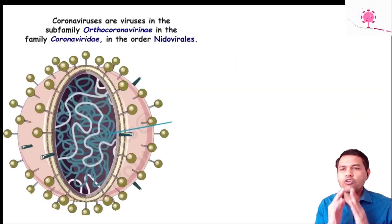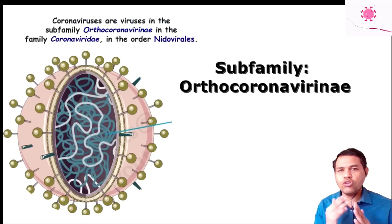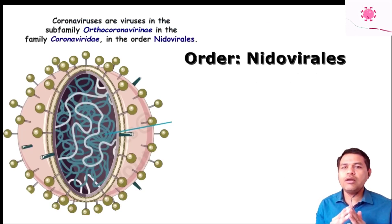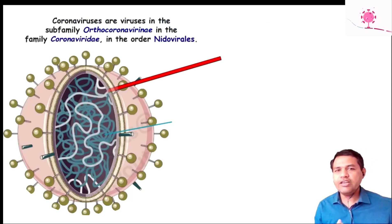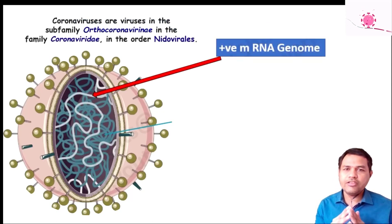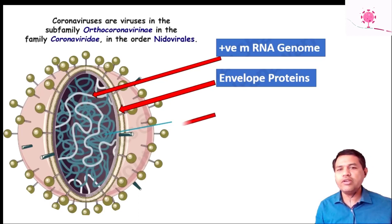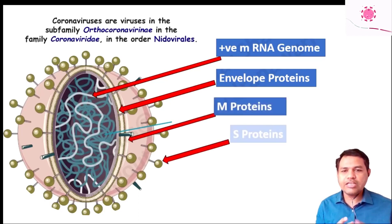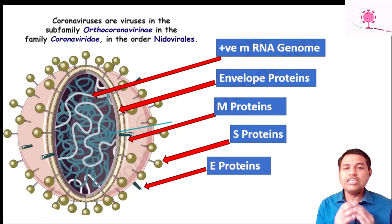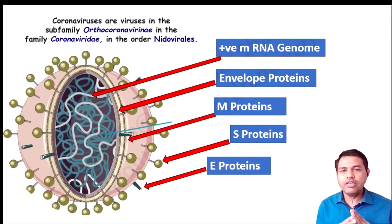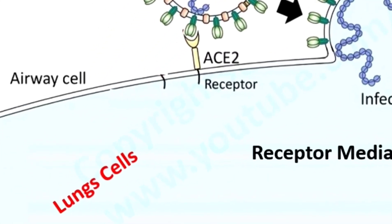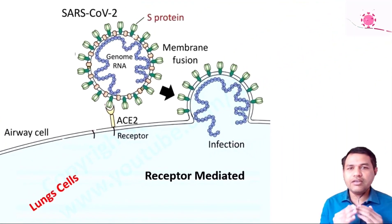Before starting, let us briefly discuss the coronavirus. Coronaviruses belong to the sub-family Orthocoronavirinae, family Coronaviridae, and order Nidovirales. They contain a single-stranded positive-sense mRNA genome, along with important structural proteins: the envelope (E) proteins, membrane (M) proteins, and spike (S) proteins. The S proteins play an important role in binding to the ACE2 receptor on lung cells, enabling viral entry via endocytosis.